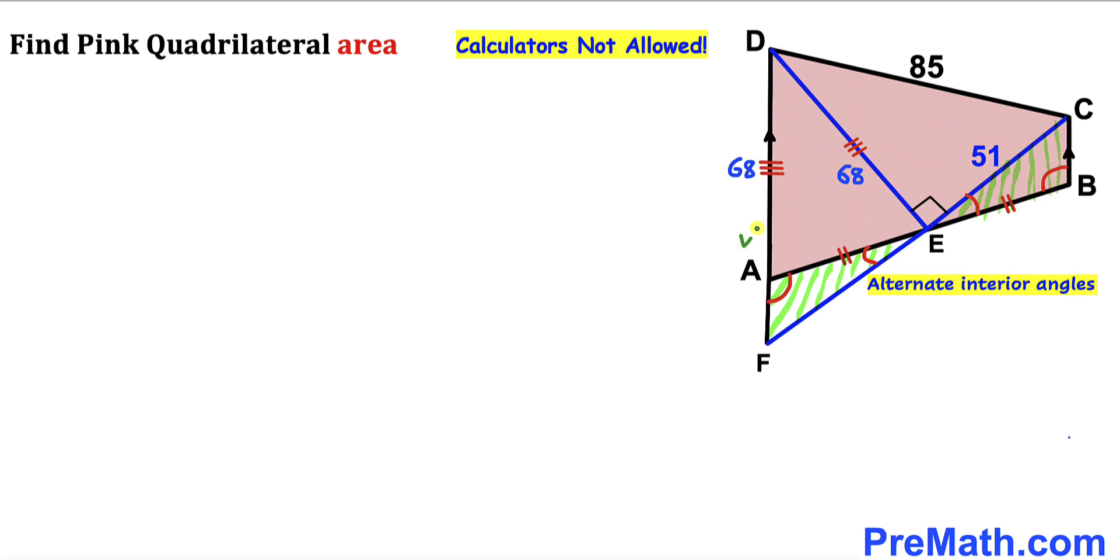Since these lines are parallel. And furthermore this segment AE is equal to this segment EB. So therefore we conclude that these two triangles, triangle AEF and the other triangle EBC, are congruent triangles according to angle-side-angle congruency theorem.